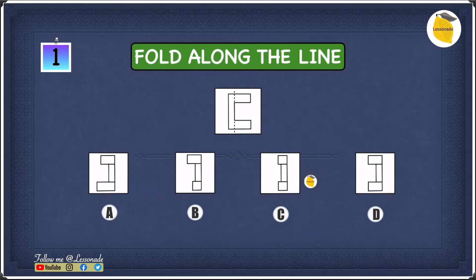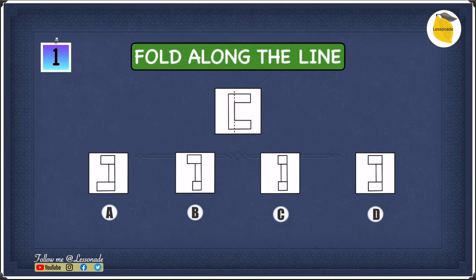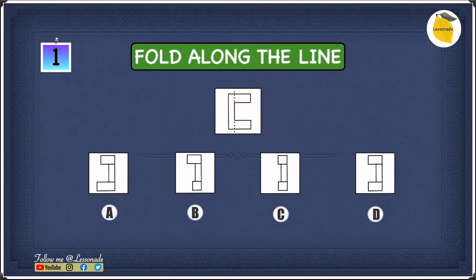Now let's have a look at this example. We have a piece of paper that has been folded along a fold line. Our job is to find how this paper would look once it has been folded along this fold line, and we need to find whether it's A, B, C, or D. The fold line is going vertically through this paper, so we have to find the direction in which the paper has been folded.